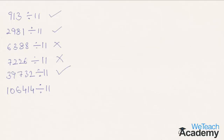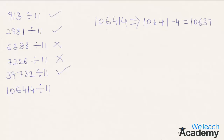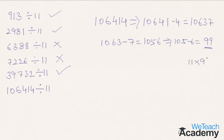Coming to the next number 16414. Subtract the last digit 4 from the remaining number 1641. We get 1637. Repeating the concept: subtract the last digit 7 from 163, we get 1056. Repeating again: subtract the last digit 6 from the remaining number 105, which gives 105 minus 6, equal to 99, which is nothing but 11 into 9. So the given number is also divisible by 11.